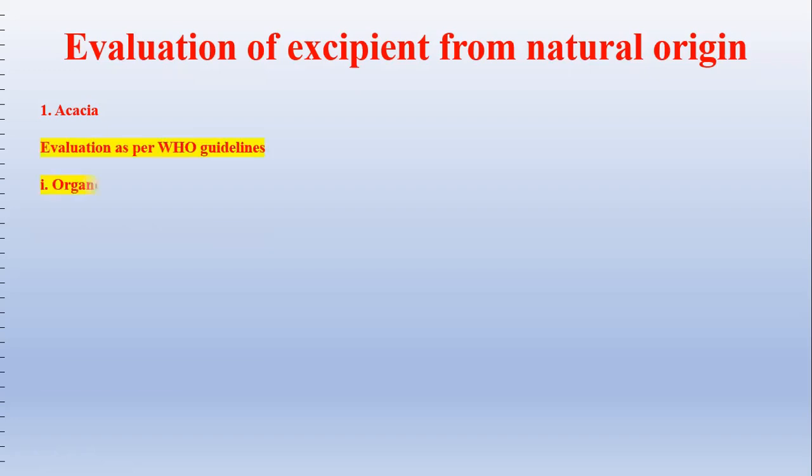Then, what is the biological source? Acacia is a gummy exudation obtained from the plant species Acacia arabica. Then its family, and the geographical source, are also to be known.